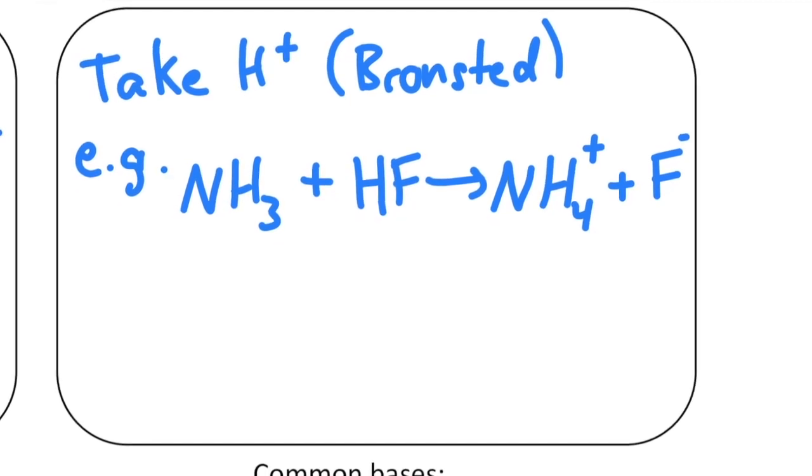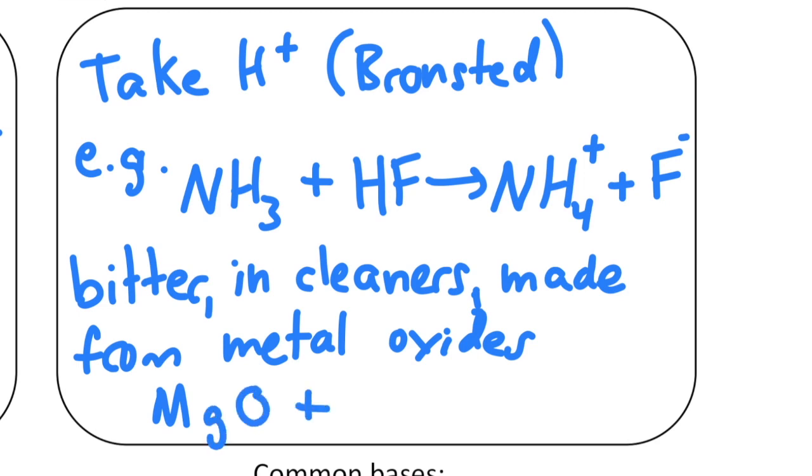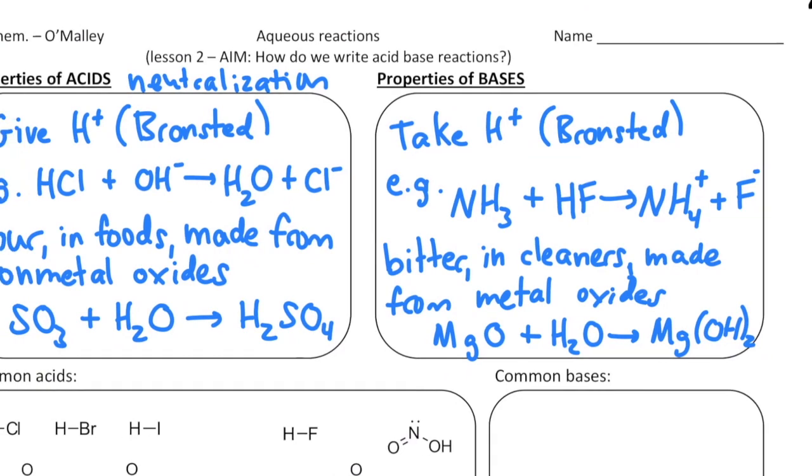Some generic properties of bases: they are not sour, they're bitter. They're in cleaners. And they're made from metal oxides. So an example of a metal oxide might be something like magnesium oxide. And if you treat magnesium oxide with water, you will make a base, specifically magnesium hydroxide.